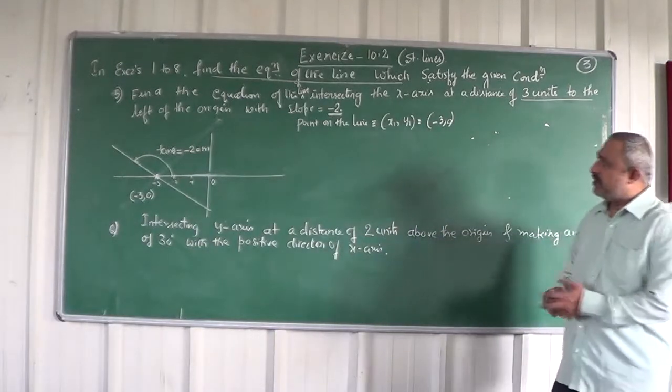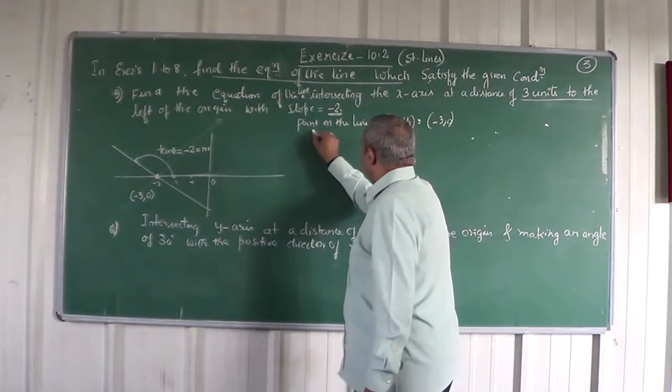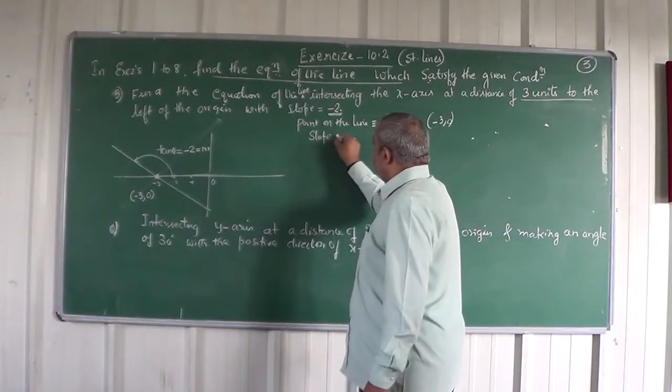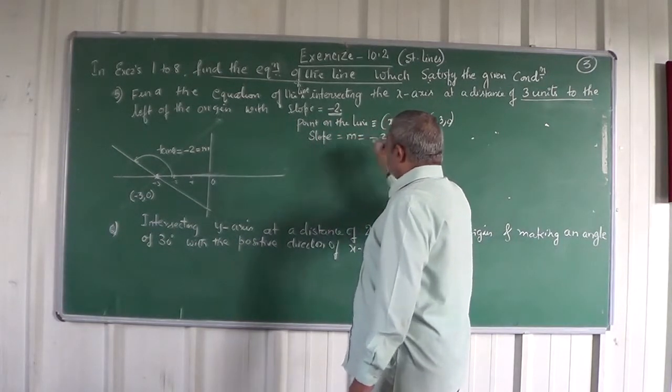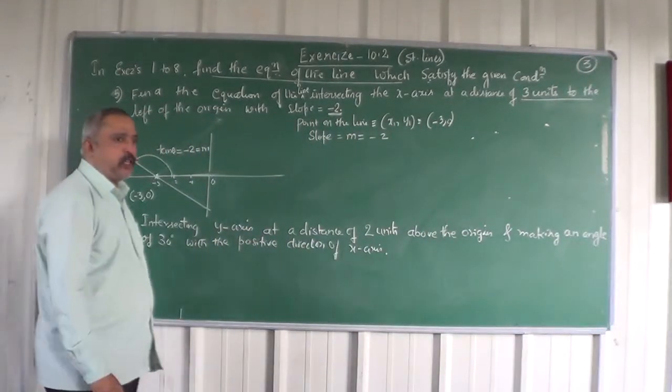I think that is what you have in the next problem. Anyway, we will finish this first. Point on the line is x1, y1, which is minus 3, 0. And slope equals m equals minus 2. So you know slope and one point form. Obviously, we will use...